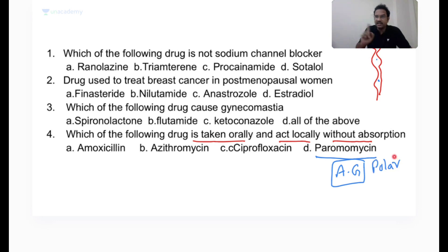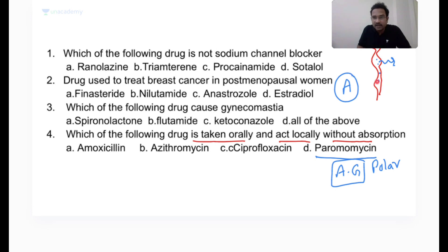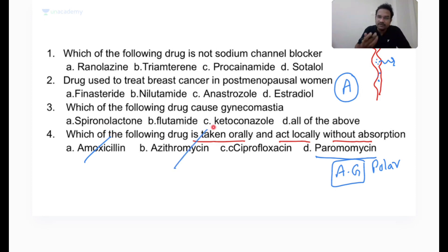Streptomycin is only available as an injection because it is not absorbed orally. Paromomycin has a tablet form and is not absorbed — it acts only in the intestinal lumen against microorganisms. It is a luminal amoebicide used for amoebic dysentery caused by Entamoeba histolytica. Amoxicillin, azithromycin, and ciprofloxacin are taken orally but get absorbed into the blood — they do not act locally. So the answer is paromomycin.